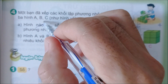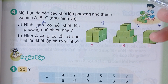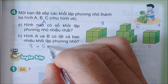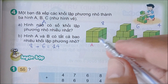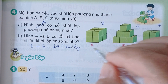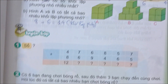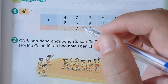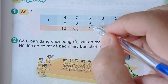Hình A có số khối lập phương nhiều nhất. Hình A và B có tất cả bao nhiêu khối lập phương? Hình A và B có tất cả số khối lập phương là 8 cộng 6 bằng 14.